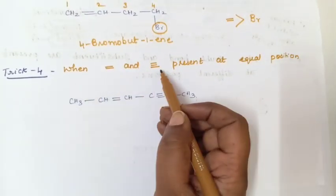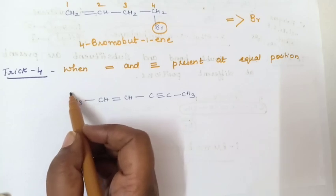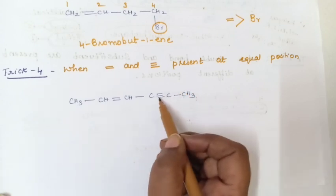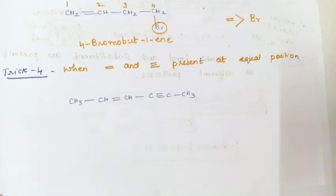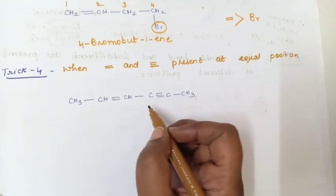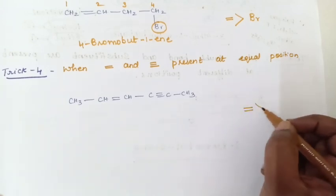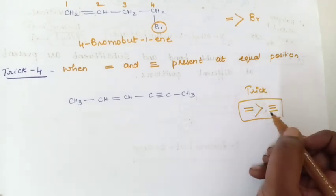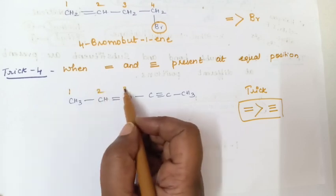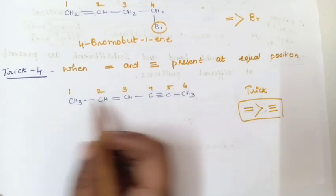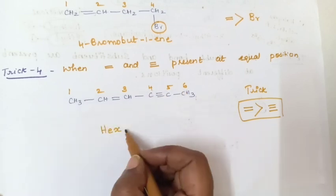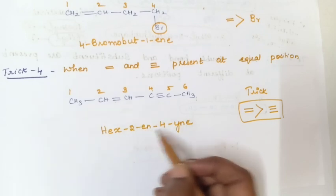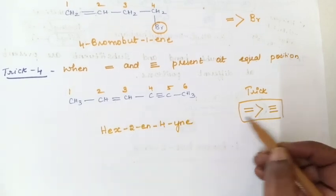Trick number 4: when double bond and triple bond are present at equal position. If numbered from one side, double bond gets number 2; from the other side, triple bond gets number 2 — so both are at equal position. Remember: double bond gets preference over triple bond. Number from the double bond side: 1, 2, 3, 4, 5, 6 — six carbons, so hex. Double bond at position 2 gives 'ene', triple bond at position 4 gives 'yne'. The name is hex-2-en-4-yne.